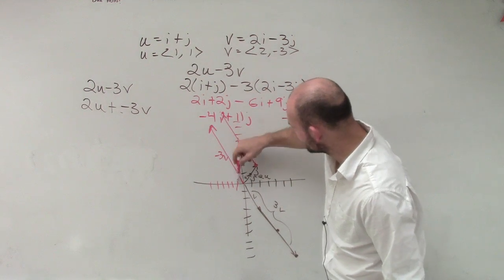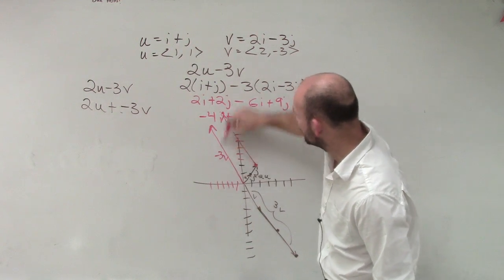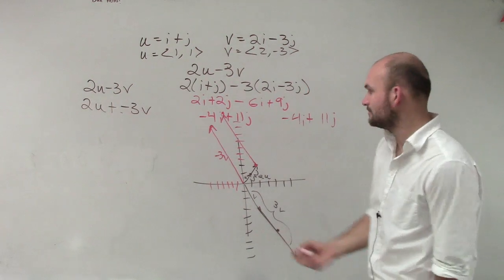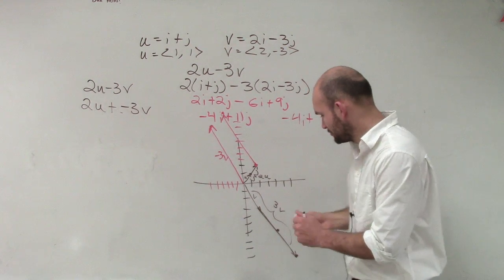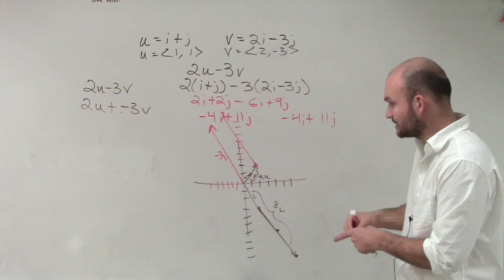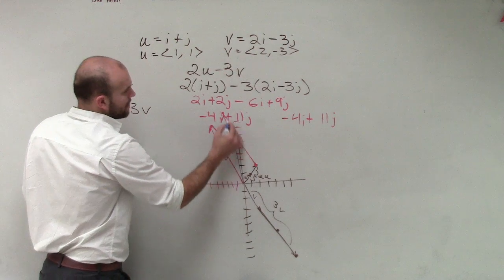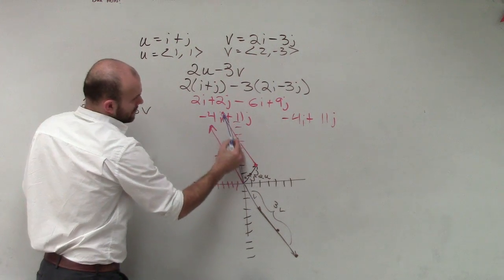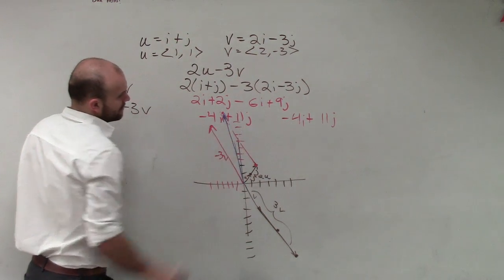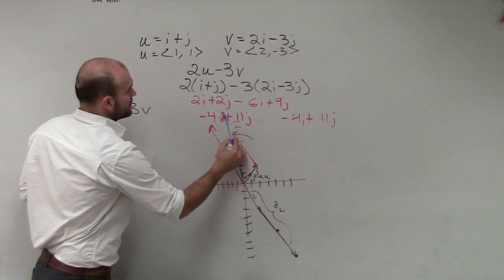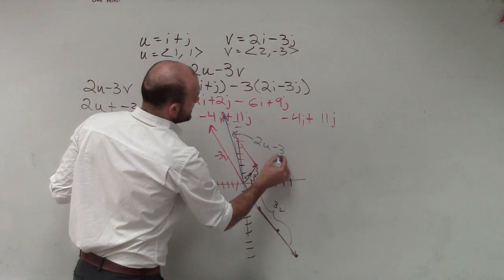but what we'll see is negative 4i plus 11j, which we'll be able to notice right here is that negative 4, up 11j. I'm not going to go through that too much, but I'll draw a nice little blue line so we can see our resultant vector, which we already know is at negative 4i. So there's your resultant vector 2u minus 3v.